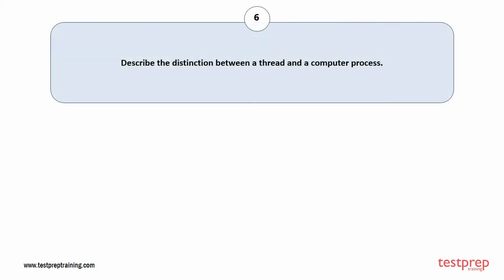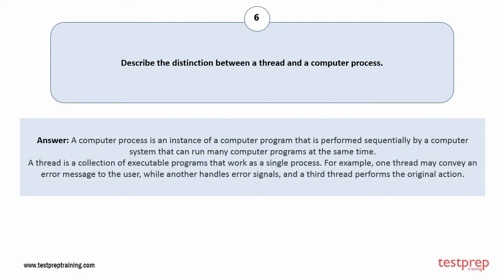Question number 6: Describe the distinction between a thread and a computer process. A computer process is an instance of a computer program that is performed sequentially by a computer system that can run many computer programs at the same time. A thread is a collection of executable programs that work as a single process. For example, one thread may convey an error message to the user, while another handles error signals, and a third thread performs the original action.